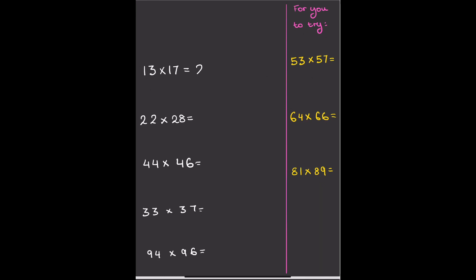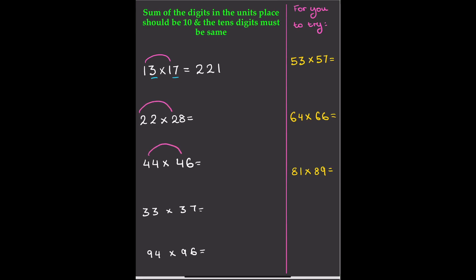Did you know that 13×17, 22×28, 44×46, 33×37, and 94×96 are all special numbers? They're special because the units digits sum to 10 — so 3 and 7, 2 and 8, 4 and 6 all add up to 10 — and the tens digits are the same in both numbers: 1 and 1, 2 and 2, 4 and 4, 3 and 3.